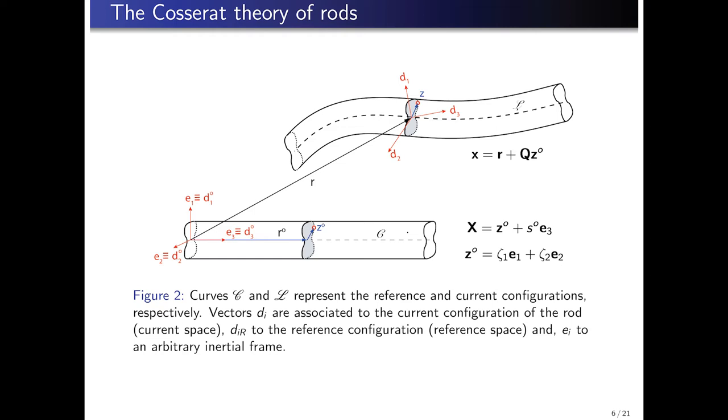In the figure shown here, the reference configuration is represented by the vector capital X. The vector is written as the sum of the coordinates of the center line of the rod, S of 0, and an associated vector representing the local coordinates of the points lying at the cross-section. The current position is referred to as lowercase x. In accordance with the kinematic hypothesis that I've mentioned, the current position is written as the sum of the position of the center line rod in the current configuration, which is lowercase r, and the vector for the points lying in the cross-section in a rotated or current state.